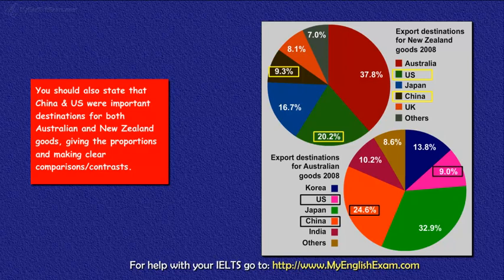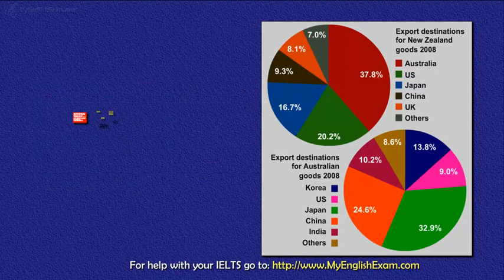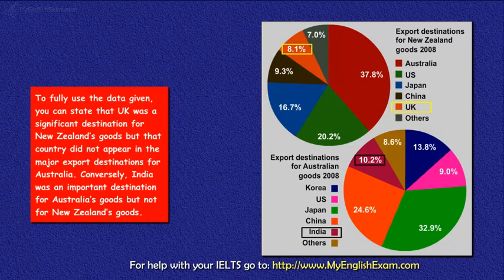You should also state that China and the US were important destinations for both Australian and New Zealand goods, giving the proportions and making clear comparisons and contrasts. To fully use the data given, you can state that the UK was a significant destination for New Zealand's goods, but did not appear in the major export destinations for Australia. Conversely, India was an important destination for Australia's goods, but not for New Zealand's.